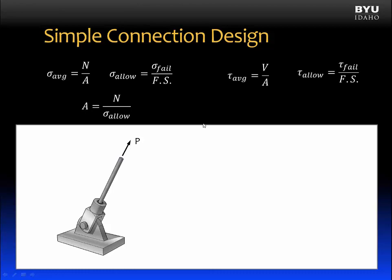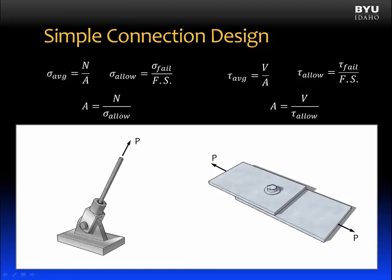This also applies to shear stress. Our average shear stress is equal to our internal resultant shear force divided by the cross-sectional area of the member. And our allowable shear stress is equal to our failure stress divided by a factor of safety. We substitute our allowable shear stress into this equation and solve for area A, giving us an equation for designing the cross-sectional area of a member in simple or direct shear. For example, if we were designing the diameter of a bolt connecting two plates experiencing shear, and we know the internal shear force V and the allowable shear stress, we can solve for the required cross-sectional area of that bolt.